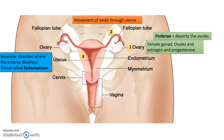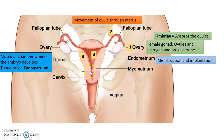The next part is the uterus, which is the chamber where the embryo will develop and attach in a process known as implantation. The uterus is lined with a tissue known as the endometrium, which grows each month to receive a fertilized ovule and provide a safe place for the embryo to develop. During menstruation, if no fertilization occurs, the endometrium detaches in a bleeding process and is released through the vagina.